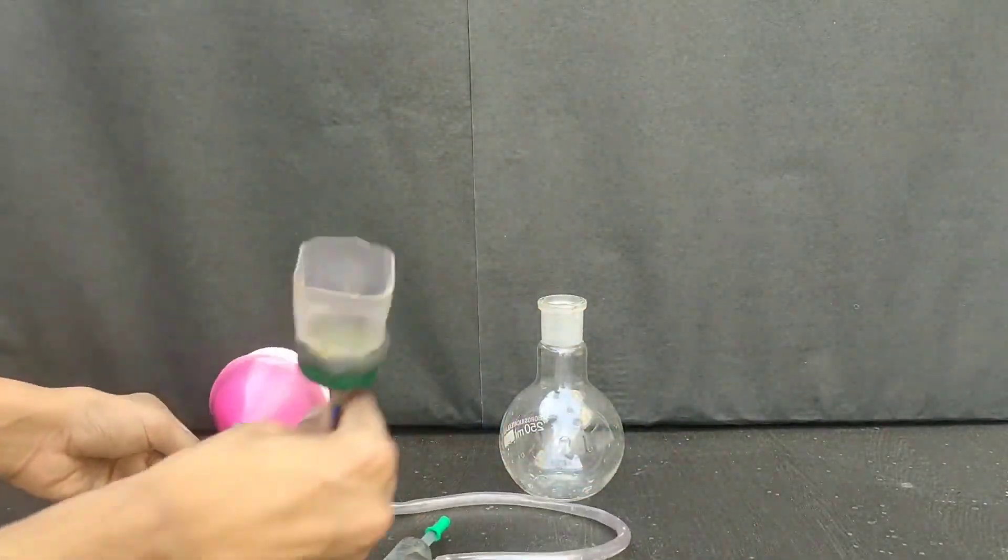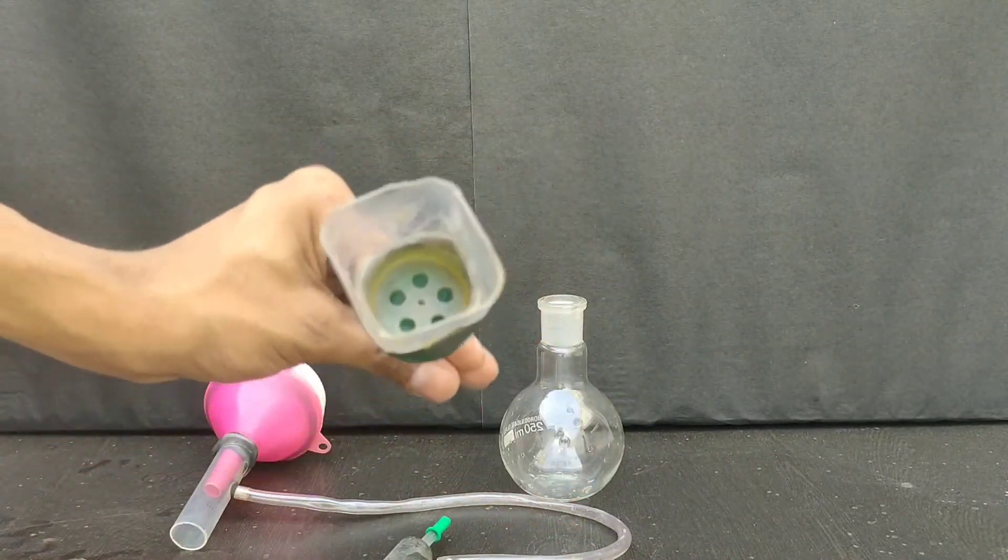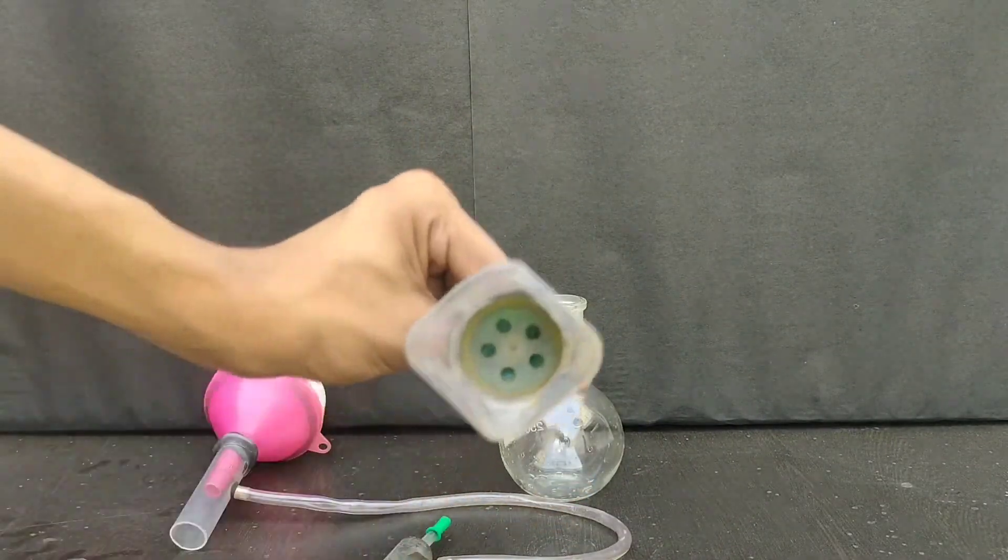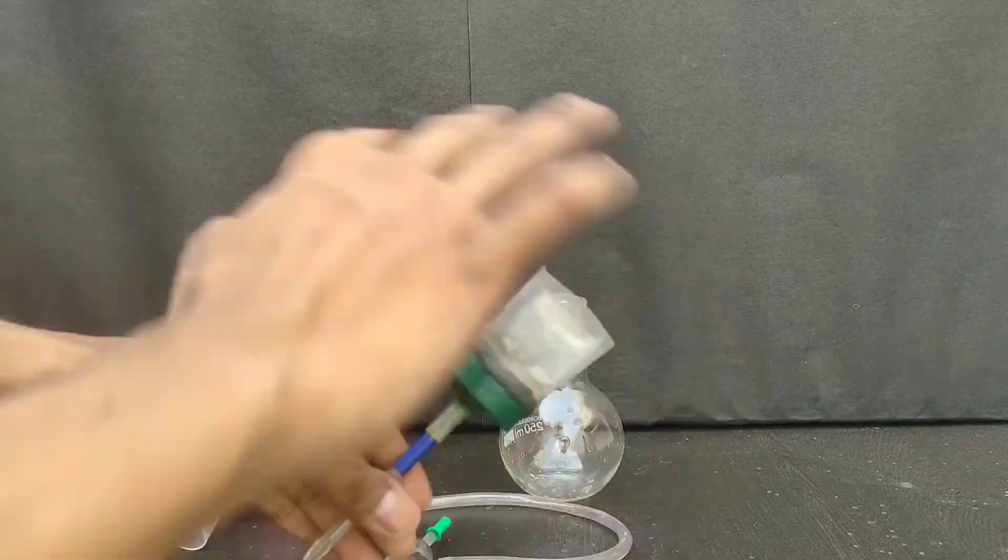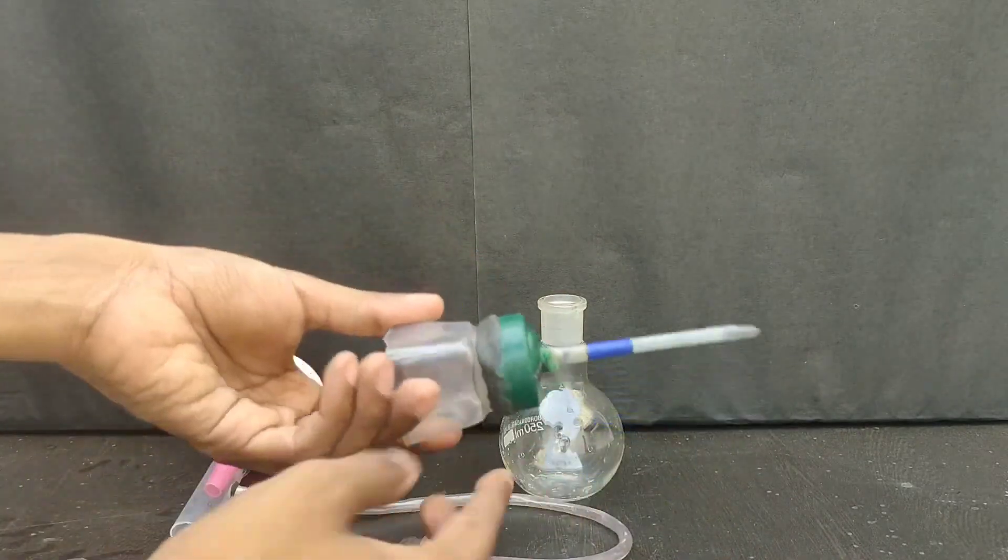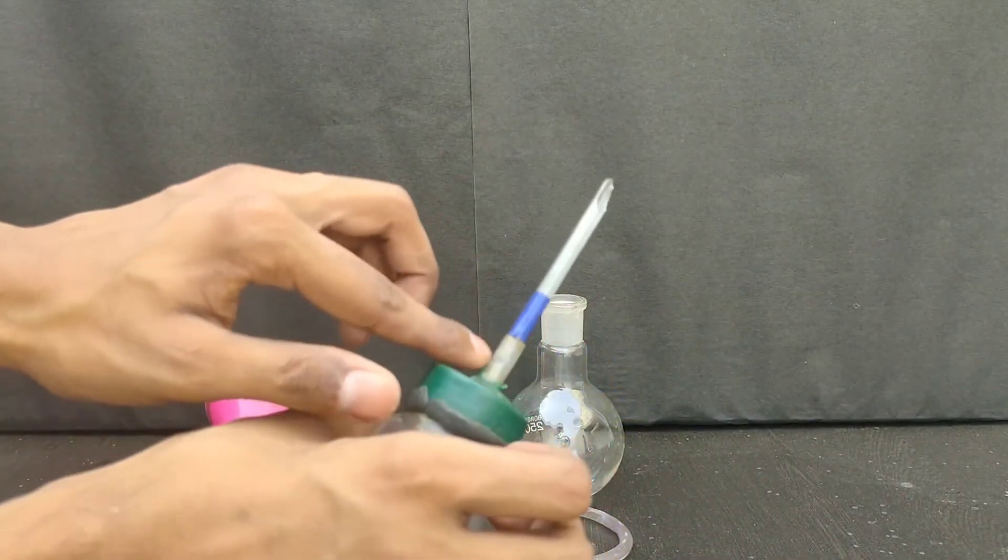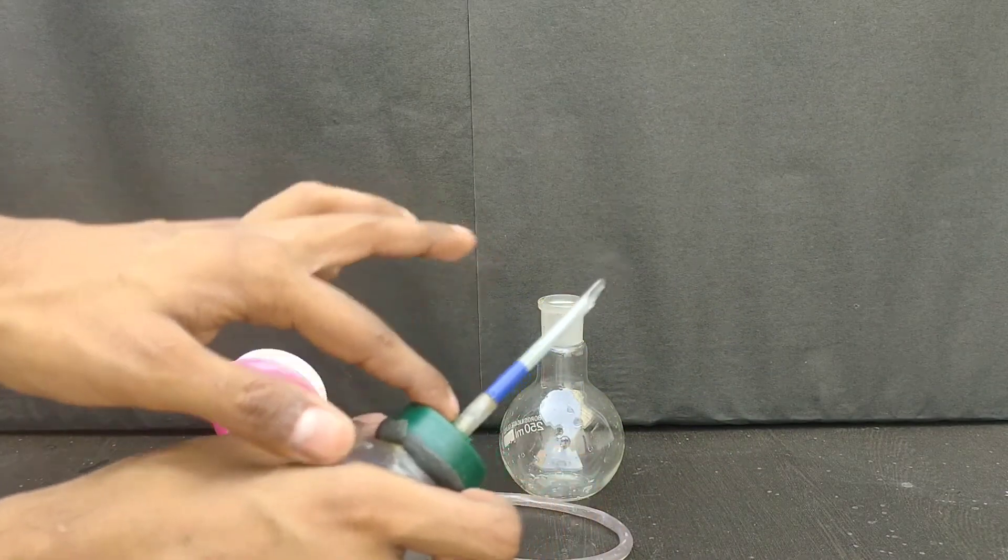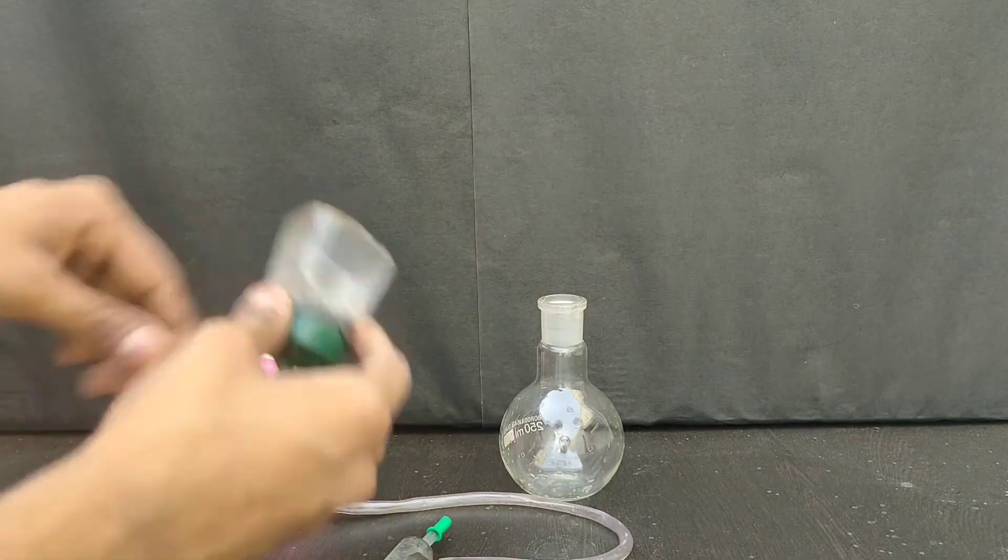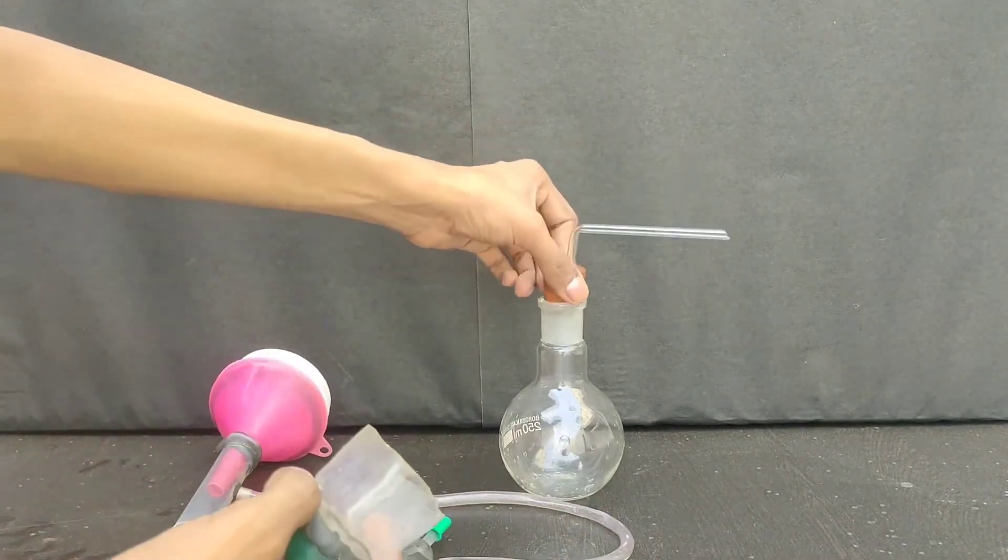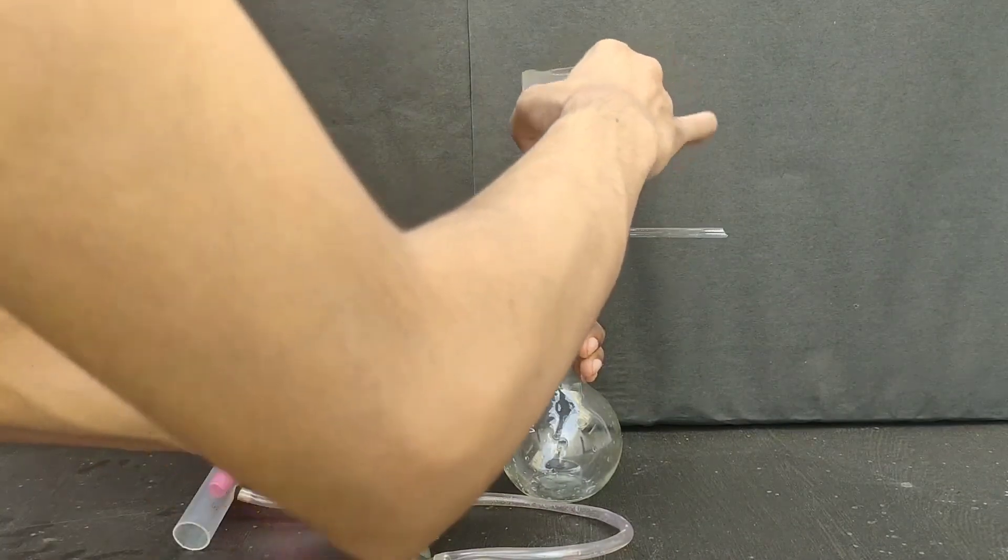Now another thing that I have made is this gooch funnel. So this was an empty sprinkler bottle. You can see that there is a disc in which holes are there. So this was an empty sprinkler bottle. I cut it into a half, sealed the cap with epoxy putty and also attached the glass tube.